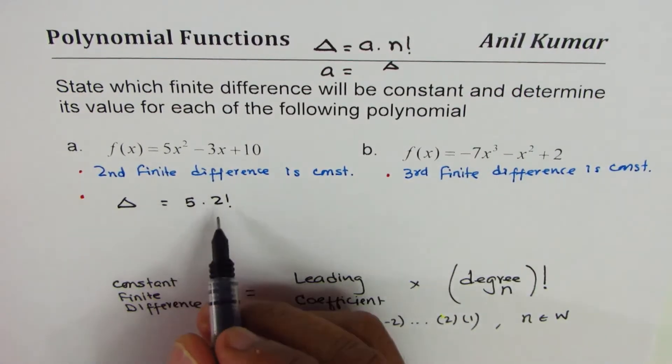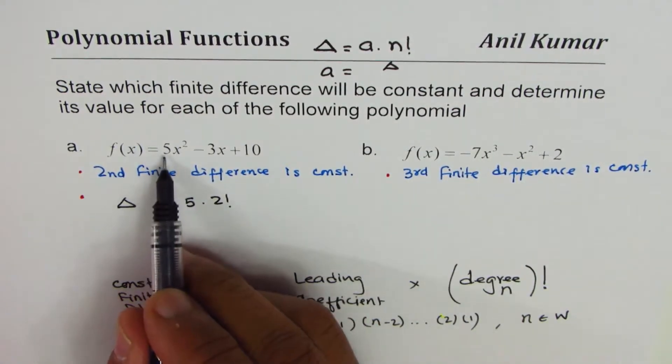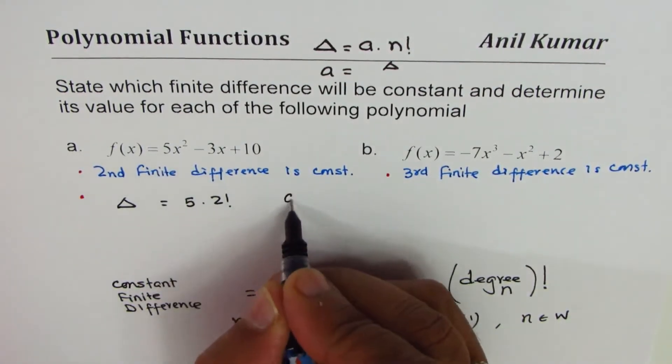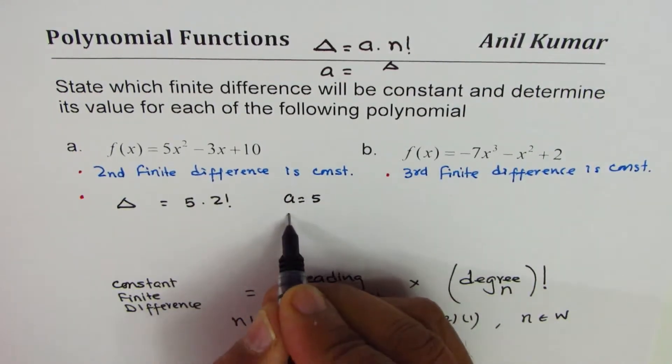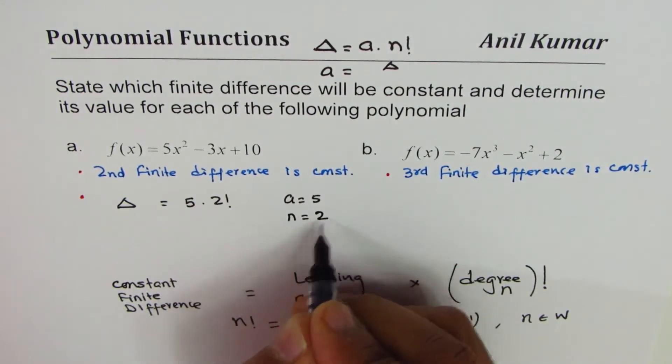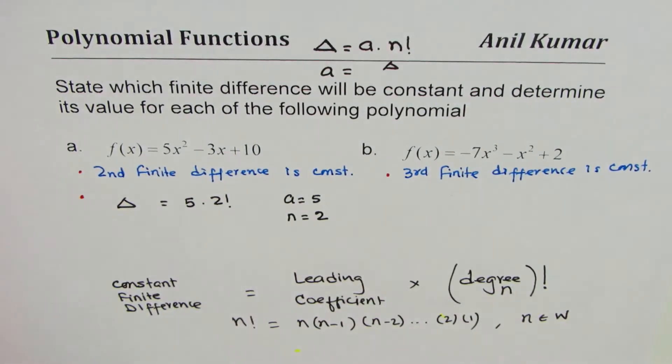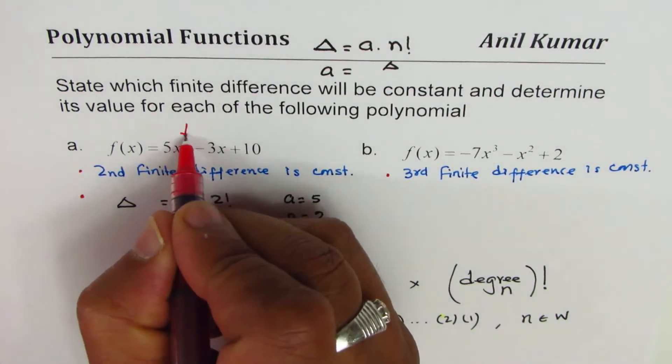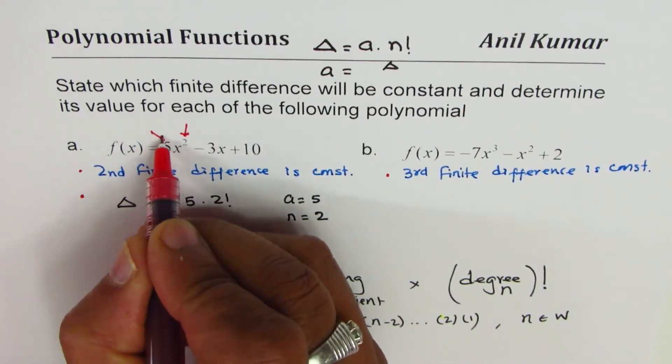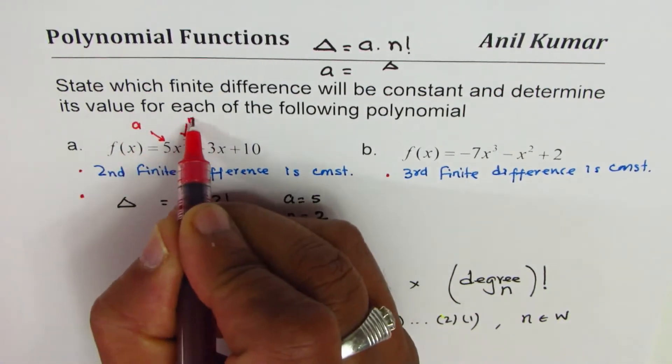So here we know that leading coefficient is 5. So we know a equals 5 and degree n equals 2. This is n for us. And this is a for us, this is n for us, correct?